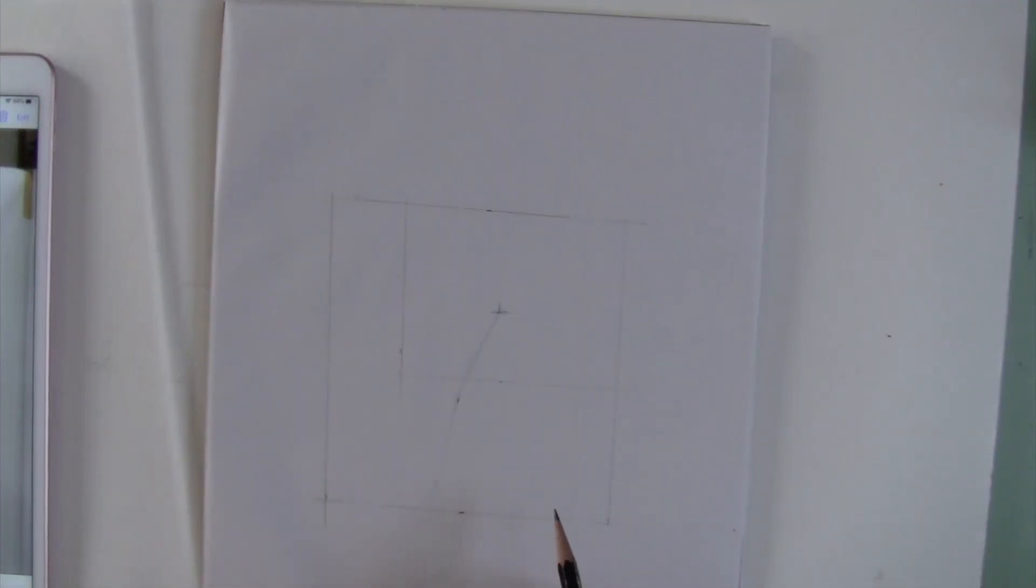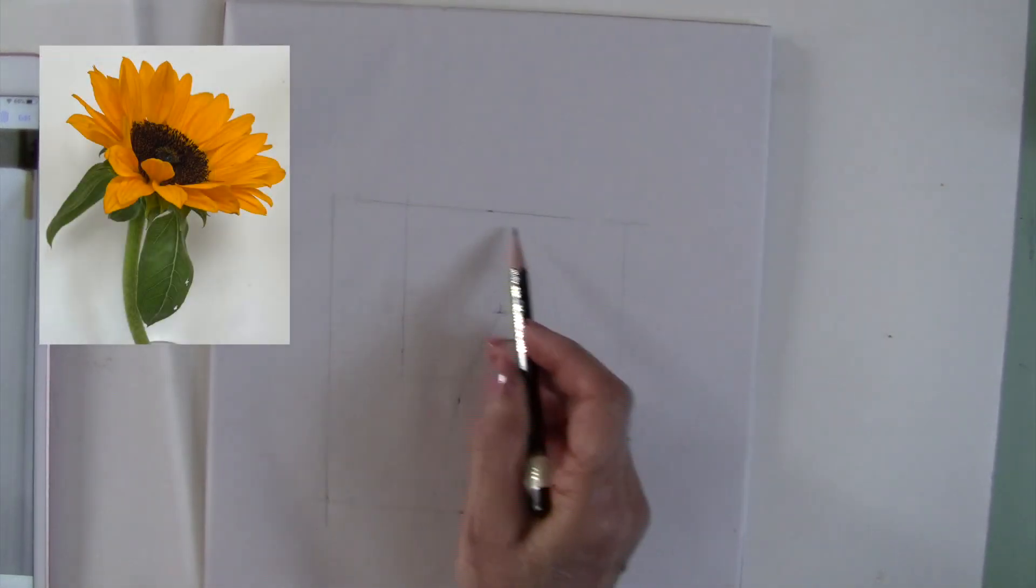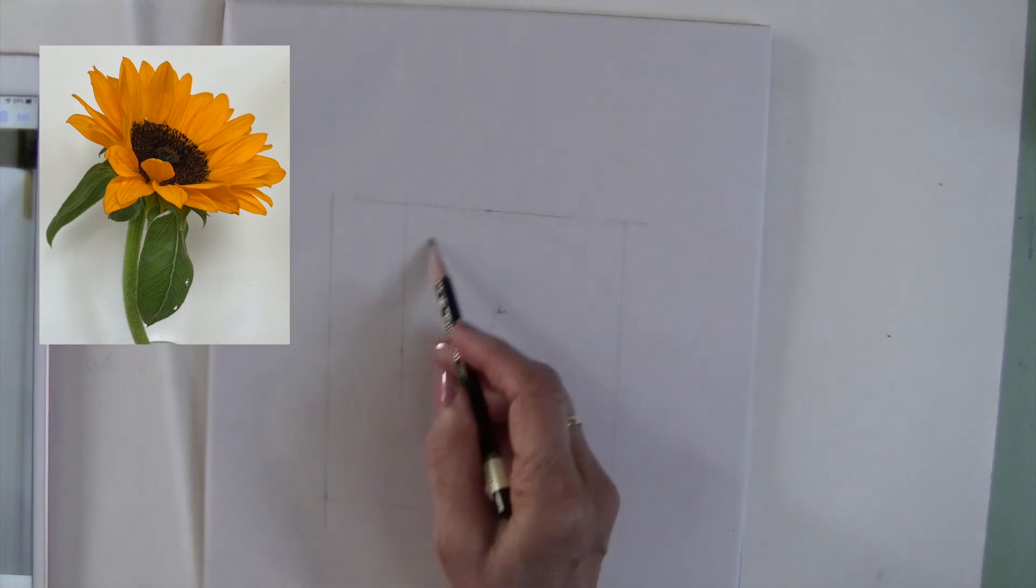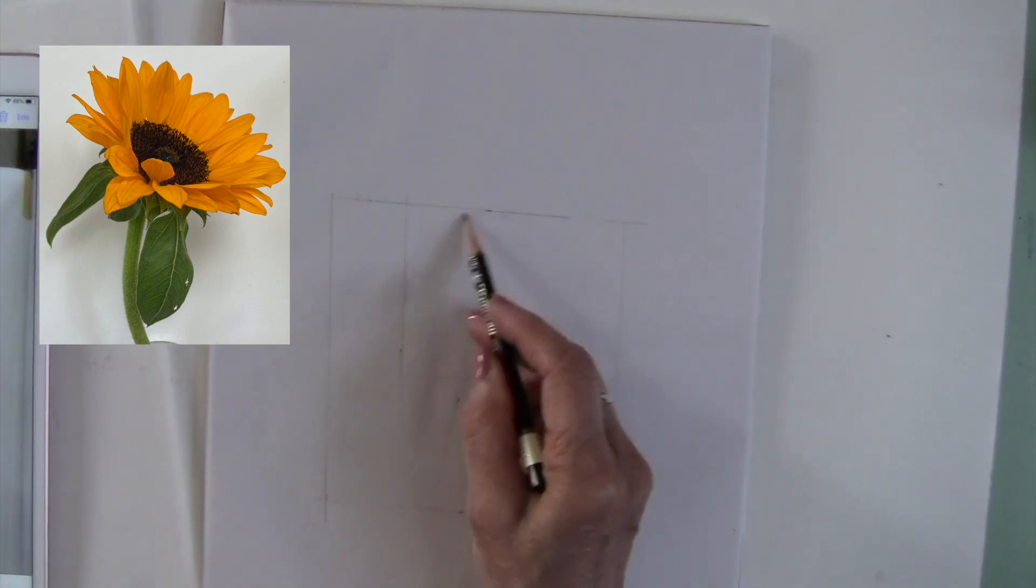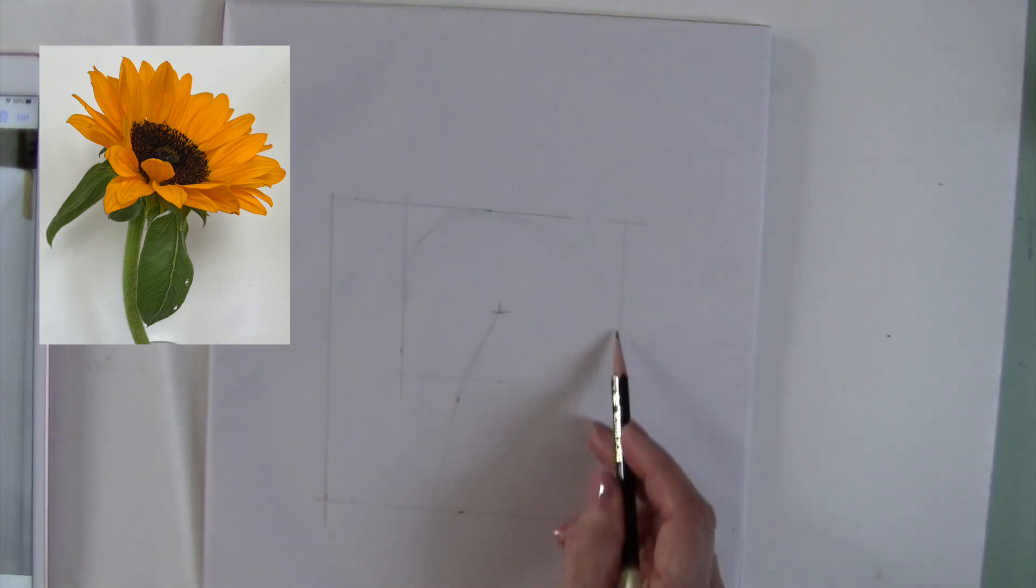To begin this drawing we need to start with our basic shapes. So the first thing I'm going to do is put in an ellipse in the box that I have designated for the flower itself.